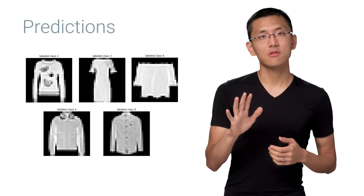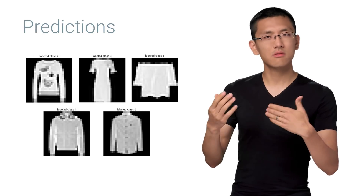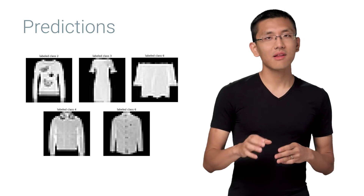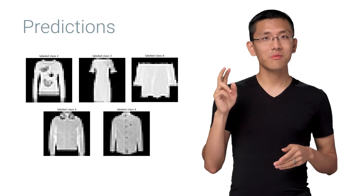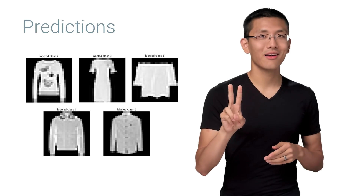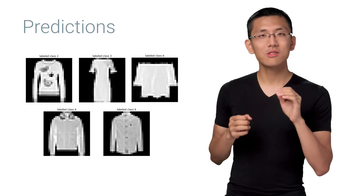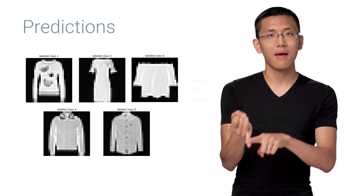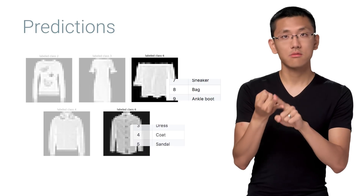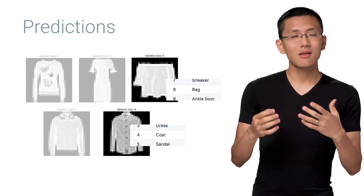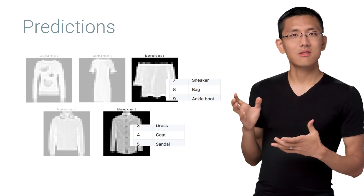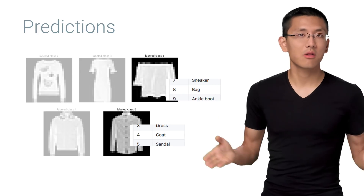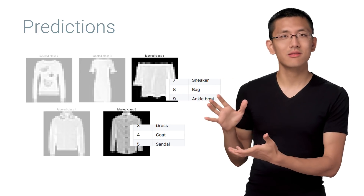I've extracted five images from the middle of the evaluation data set for us to try some predictions on. I picked these five not just because they were in the middle, but because my model managed to get two of them wrong. Both were supposed to be shirts, but the model thought that the third example was a bag, and the fifth example was a coat, incorrectly. And you can see, looking at these images, how these examples are more challenging than handwritten numbers, if for no other reason than just the graininess of the images.